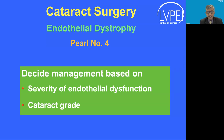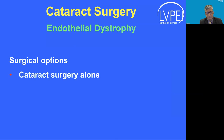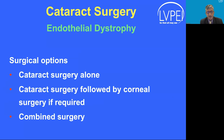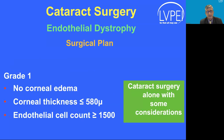Once the disease is classified, you decide on management based on severity of endothelial dysfunction and cataract grade. Options include: cataract surgery alone, cataract surgery followed by corneal surgery if required, or combined cataract and corneal surgery. In Grade 1 (no edema, thickness under 580 microns) you can proceed with cataract surgery alone, with considerations for protecting compromised endothelium. In Grade 2, both options are available depending on nuclear sclerosis grade.